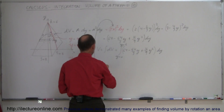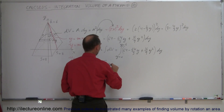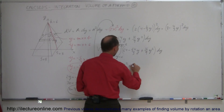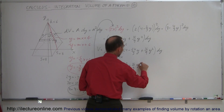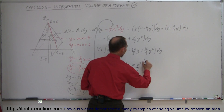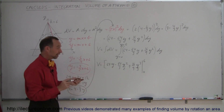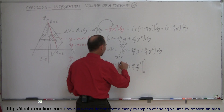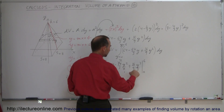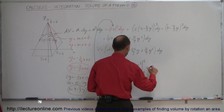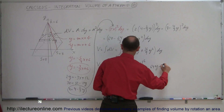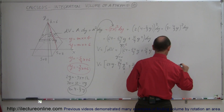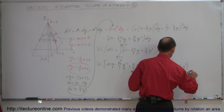Now all we have to do is integrate. This becomes 64y minus 64/3 times y²/2 plus 16/9 times y³/3, which simplifies to 64y minus 32/3 y² plus 16/27 y³, all evaluated from 0 to 6.